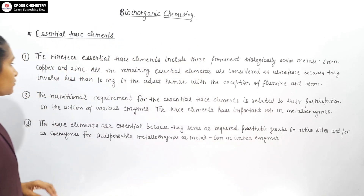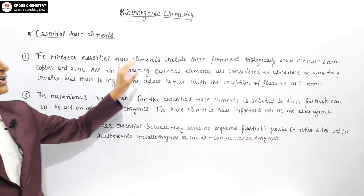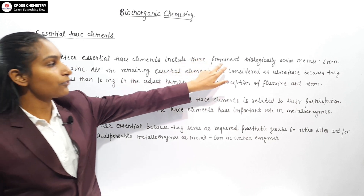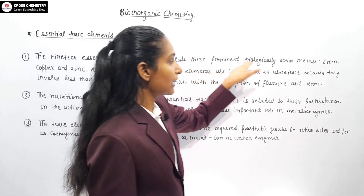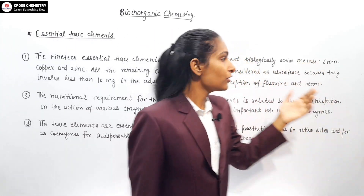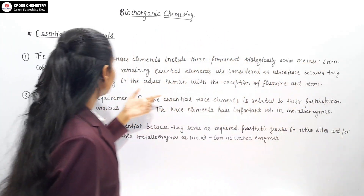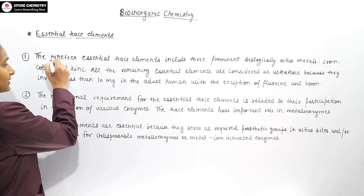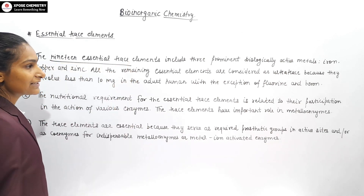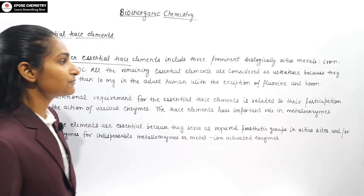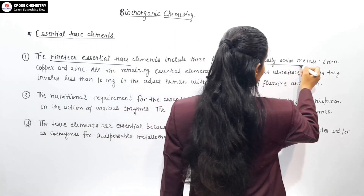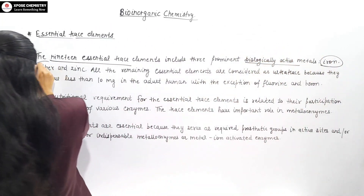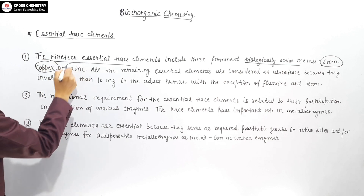We have 19 essential trace elements. There are 3 prominent biologically active metals: Iron, Copper and Zinc. Remember: 19 essential trace elements, with the prominent biologically active metals being Iron, Copper and Zinc.